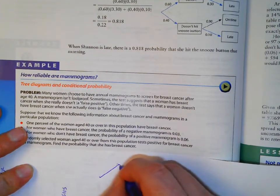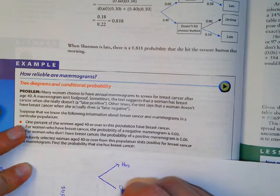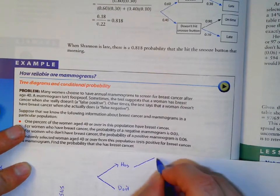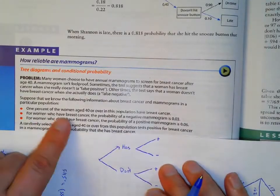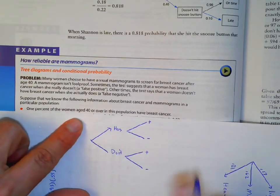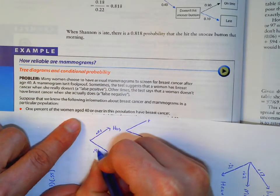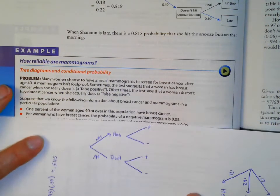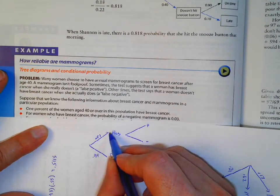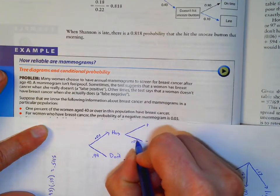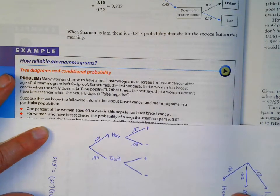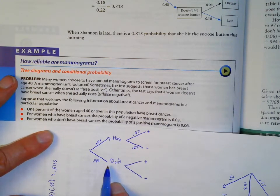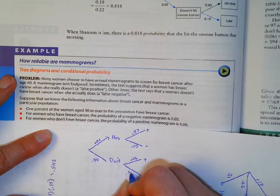Either a woman has breast cancer or she doesn't. If she has breast cancer, she will test positive or negative; if she doesn't have it, she can also test positive or negative. 1% of women age 40 or over have breast cancer, so 99% don't. For women who have breast cancer, the probability of a negative result is 3%, so the probability of a positive result is 97%. For women who don't have breast cancer, the probability of a positive is 6%, meaning 94% correctly test negative.